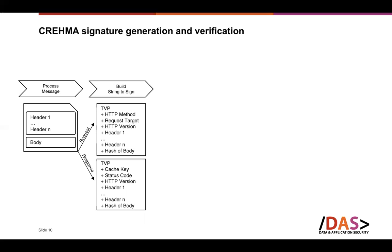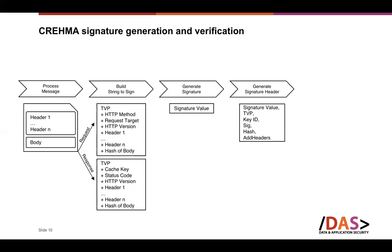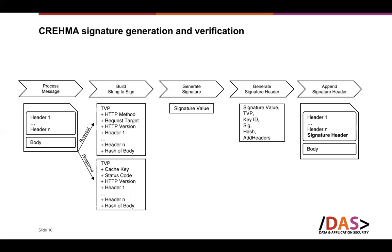With current signature schemes, an attacker can still swap two signed responses with each other — taking a signed response from one cache key and placing it under a different cache key — because the cache key is not integrated into the signature process, so the client cannot detect the swap. If the cache key is integrated into the signature process, this kind of attack is no longer possible. We build a signature value that is also included in the signature header along with additional meta-information.